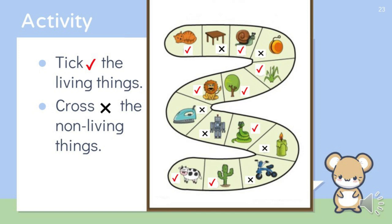Then we have a picture of a yo-yo. It is a toy and it is a non-living thing, so you are going to cross it. Then there is a picture of a snail. Snail is a living thing, so we are going to tick it. Then there is a picture of a table. And table is a non-living thing, so you are going to cross it.